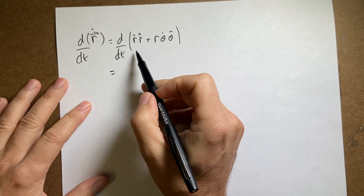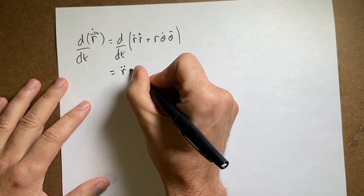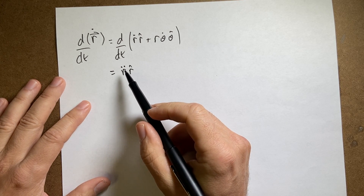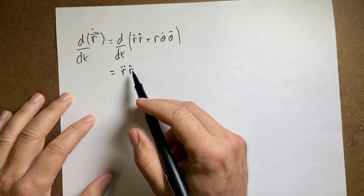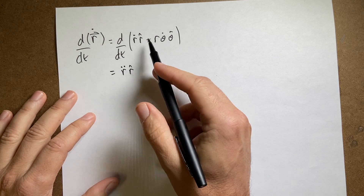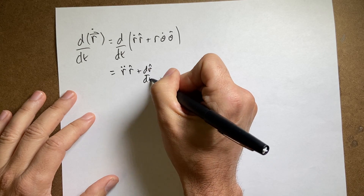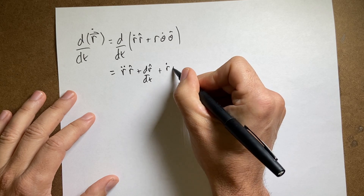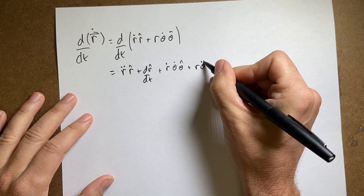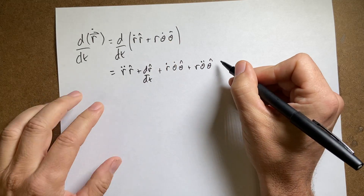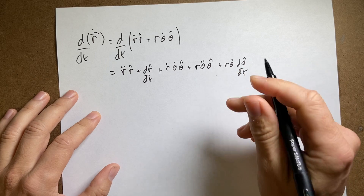Let's take the derivative term by term. The derivative of r-dot gives r-double-dot, so I get r-double-dot times r-hat — note that r-double-dot is a scalar and r-hat makes it a vector. Then I also need the derivative of r-hat itself: plus r-dot times dr-hat/dt. Next term: plus r-dot theta-dot theta-hat. Then: plus r theta-double-dot theta-hat. And finally: plus r theta-dot times d(theta-hat)/dt. That last term is where we need to find d(theta-hat)/dt.